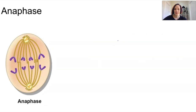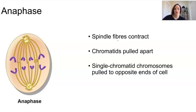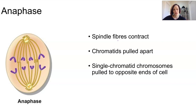In anaphase, the spindle fibers contract and shorten, pulling at the centromere in two directions and splitting the chromatids in half. The sister chromatids, once stuck together at the centromere, are now separated. The spindle fibers keep shortening and pull the now single-chromatid chromosomes to opposite ends of the cell, with each new daughter cell receiving one chromosome — making it identical to the original parent cell from the DNA replication.